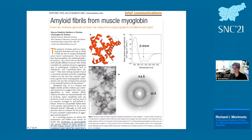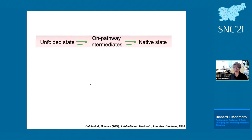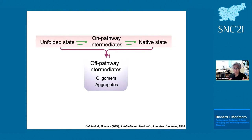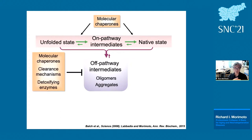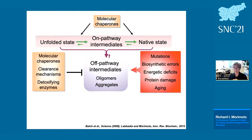This is myoglobin as a soluble protein, and here is myoglobin as amyloid, first demonstrated by Chris Dobson's laboratory. Our laboratory has been very interested in how every polypeptide folds on-pathway to native states. These are reversible reactions, but depending on the environment or promoted by mutations, proteins can go off-pathway forming oligomers and aggregates. Fortunately, our cells co-evolved — probably pre-evolved — molecular chaperones to ensure folding to the native state, and also brought forth the activities of the autophagy and ubiquitin-proteasome system to prevent off-pathway intermediates.